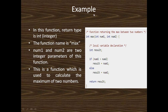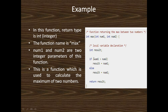Now I describe a simple example. The function return type is int, function name is max, and there are two integer parameters: int num1 and int num2. This is the body of the function, and this function is used for calculating the maximum number between two numbers.